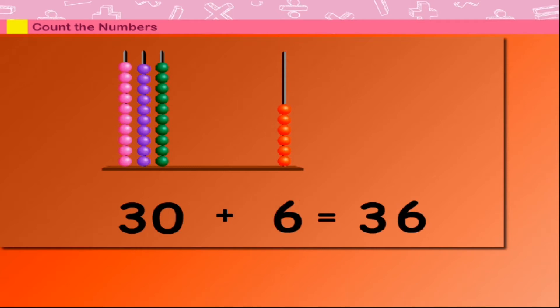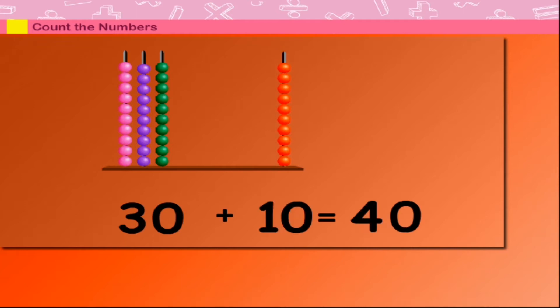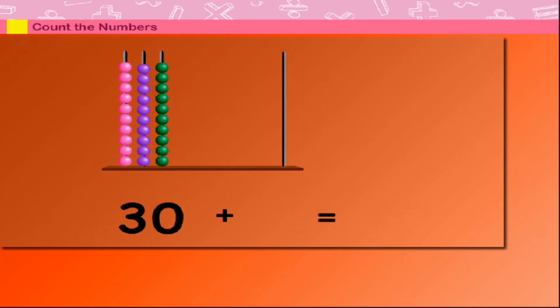30 plus 6 is equal to 36. 30 plus 7 is equal to 37. 30 plus 8 is equal to 38. 30 plus 9 is equal to 39. 30 plus 10 is equal to 40.